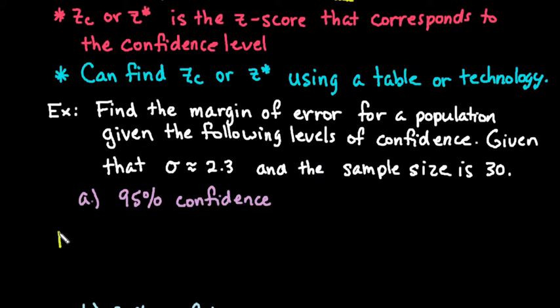For this we're going to set up our formula: E equals z_c times sigma divided by the square root of n. We already know the sigma and the square root of n so we can plug those in. What we have to do is find our z_c.